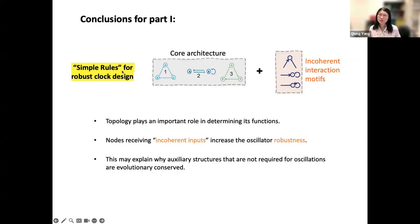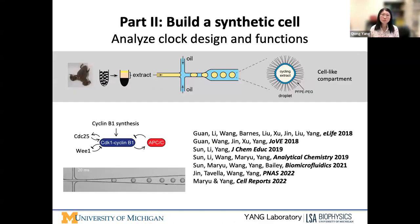Just to summarize this part, topology plays an important role. We have identified some simple rules for both core architecture that plays an important role, but also the local interactions, specifically the incoherent input interactions that can increase oscillator robustness. This may explain why in nature we have so complicated network design and some of these highly evolved structures that are not required for oscillation but still well evolved, probably because these peripheral structures have some kind of function that is important for clock performance. Experimentally, we could also design some minimum system. Here, I'm showing you the frog extracts I showed at the beginning.